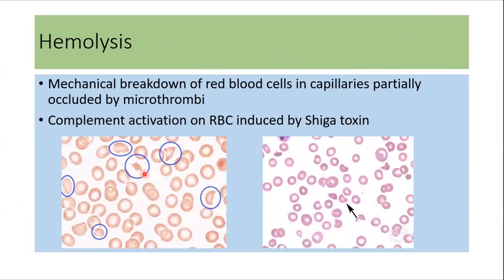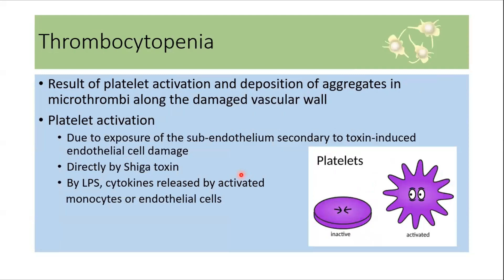Hemolysis in EHEC-associated HUS occurs because of mechanical breakdown of red cells in capillaries partially occluded by microthrombi. Hemolysis also occurs because of complement activation on RBCs induced by Shiga toxin. Thrombocytopenia is the result of platelet activation and deposition of aggregates in microthrombi along the damaged vessel wall. Platelet activation can occur because of Shiga toxin directly, or because of lipopolysaccharide and cytokines released by activated monocytes or endothelial cells.